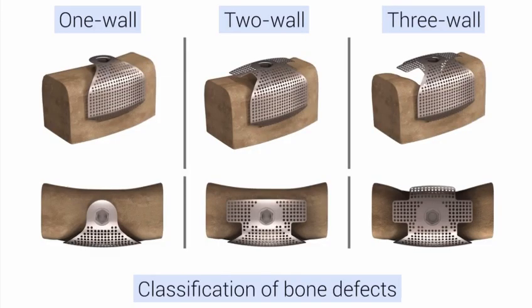There are three categories of bone defects based on their degree and form: one-wall augmentation, two-wall augmentation, and three-wall augmentation. 3D Mesh can be adapted to fit all three of them.